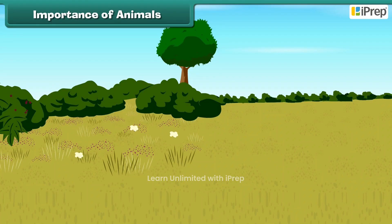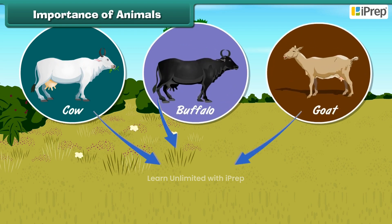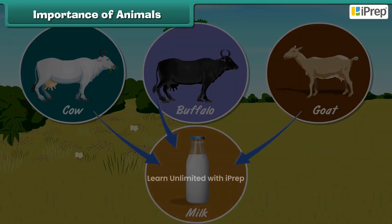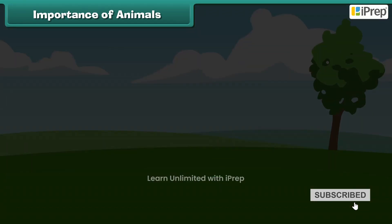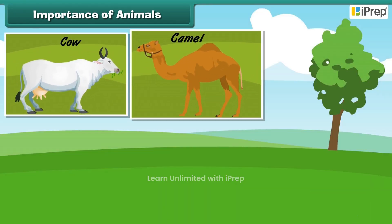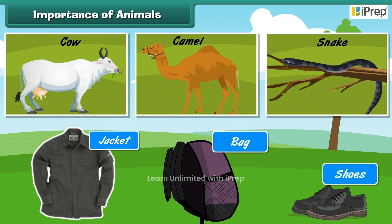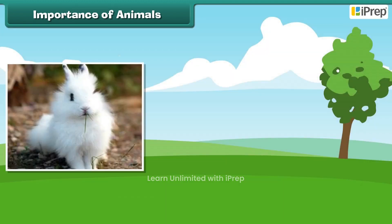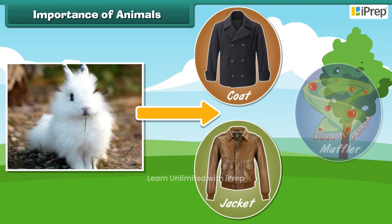Animals help us in many ways. Cows, buffaloes, and goats give us milk. Sheep give us wool that keeps us warm in winters. Cows, camels, snakes, etc. give us leather for jackets, bags, and shoes. Some animals give us fur for coats, jackets, and mufflers.